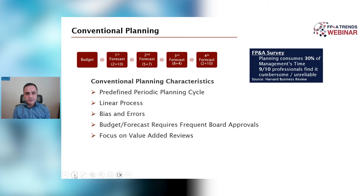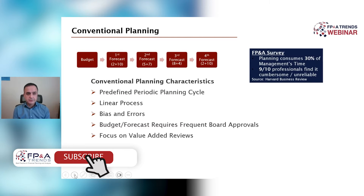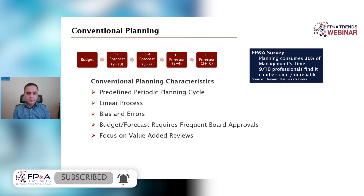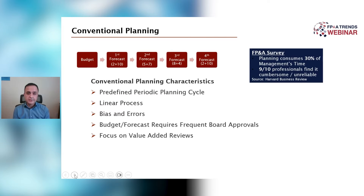As you know, the conventional FP&A cycle is pretty linear, it's repetitive, and as Hans communicated before, a significant amount of time is spent in preparing and updating those forecasts. What you can do with respect to continuous planning is you can get rid of that human factor, or at least reduce it, remove the bias, and use the forecast for better purposes for looking ahead.